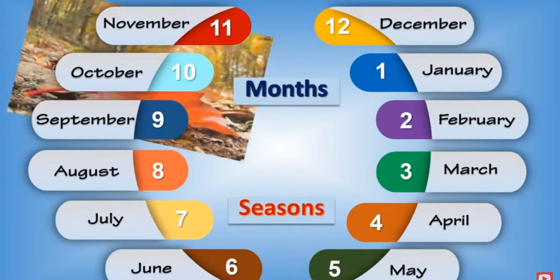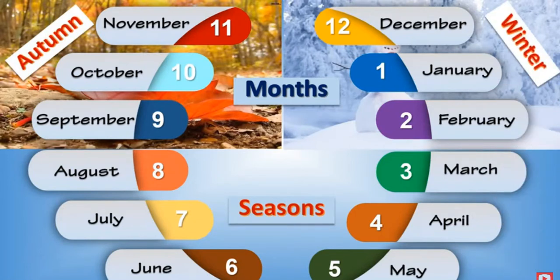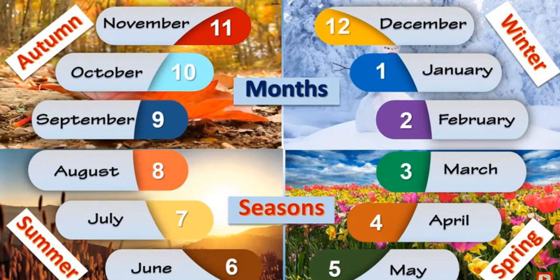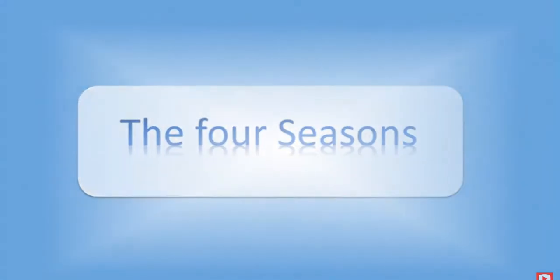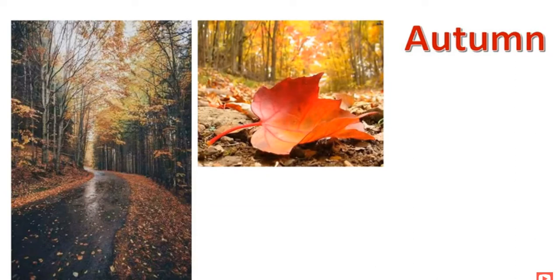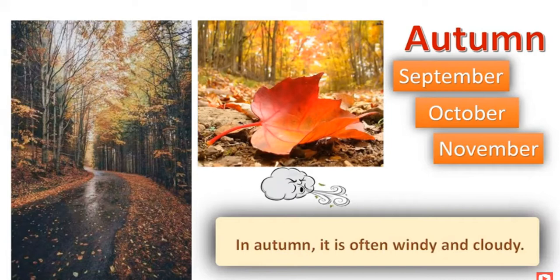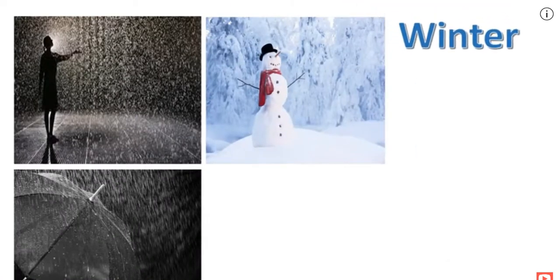Seasons: Autumn, Winter, Summer. The Four Seasons. Autumn — it is three months: September, October, and November. In autumn it is often windy and cloudy.